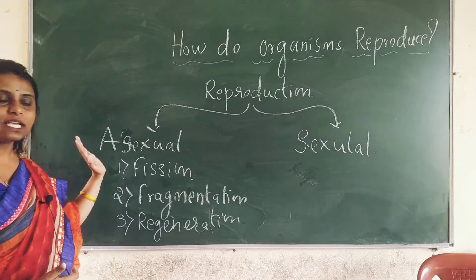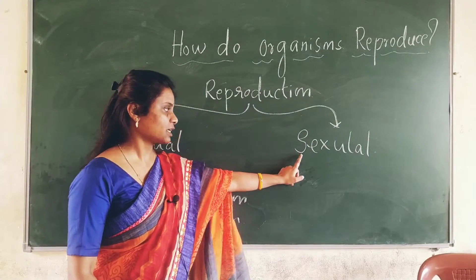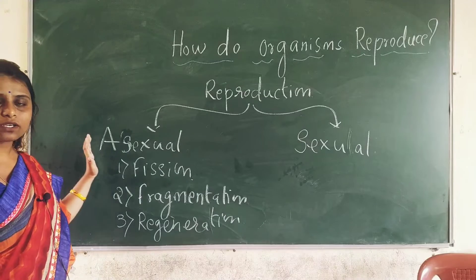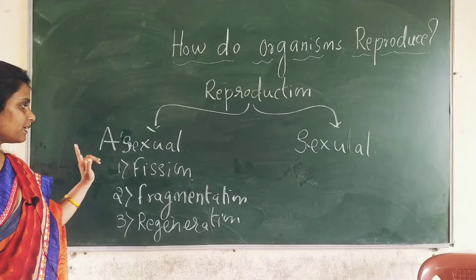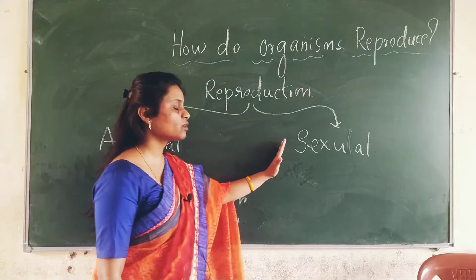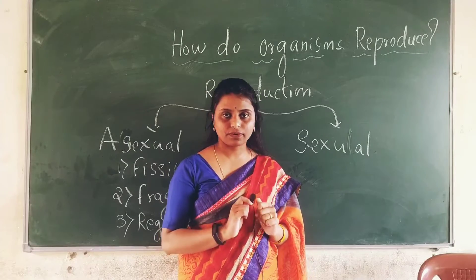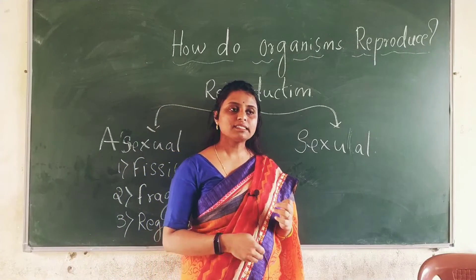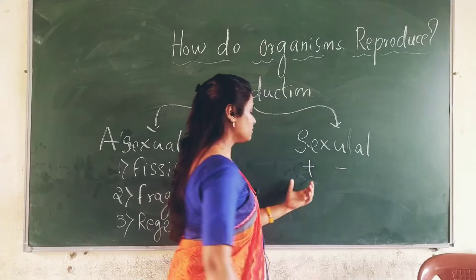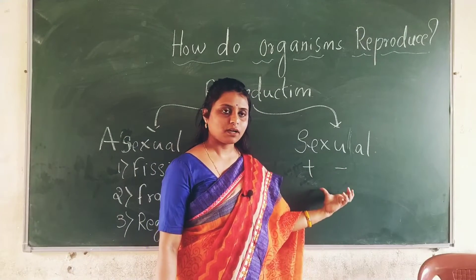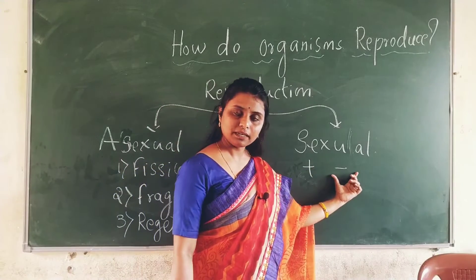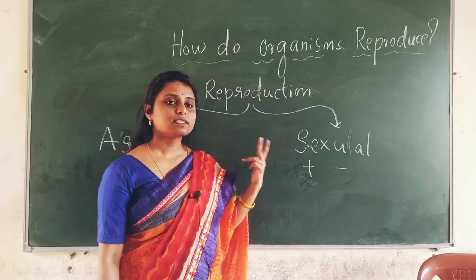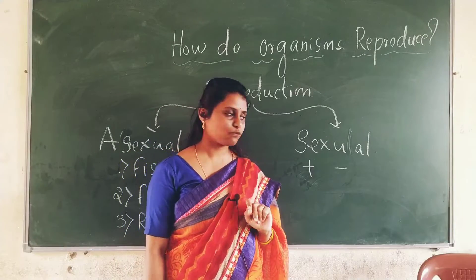In asexual reproduction we need only one organism, whereas in sexual reproduction we need two parents which are sexually different. In humans we need male and female to reproduce. In some fungi, we see a positive strain and negative strain — this is the sexuality of these fungi. They are sexually different and they combine to form a new organism.